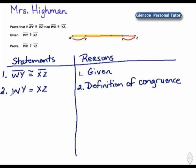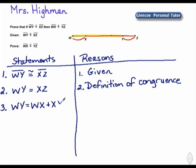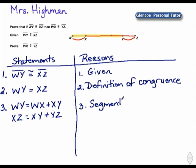Now, since we have to prove that this short segment is congruent to the short segment on the right side, we're going to break up the other segments. In our third statement, W-Y equals W-X plus X-Y, and also X-Z equals X-Y plus Y-Z. We can say that using the segment addition postulate.